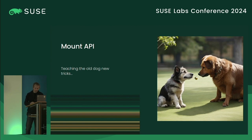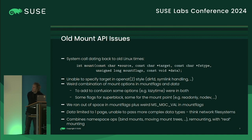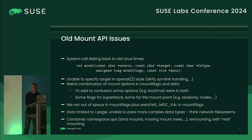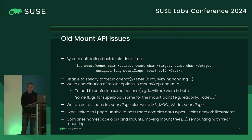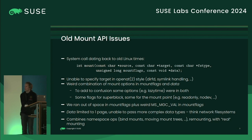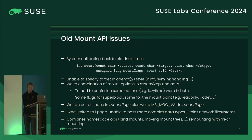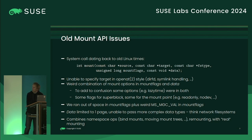Now let's look at the mount API and changes in how we mount file systems. The mount system call has been there since day zero of Linux and has gone through only minimal change. You give it the source device, target directory, file system type, and flags — with mount options partly stored in the flags and partly as a string in the data pointer. Over the years, many problems have accumulated.